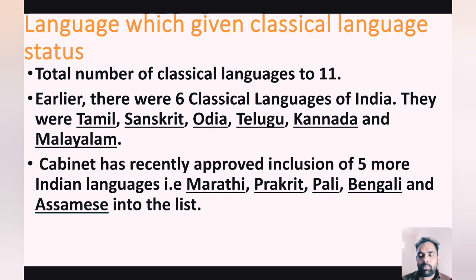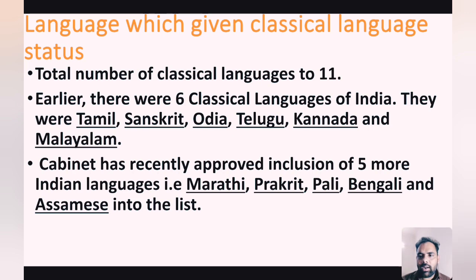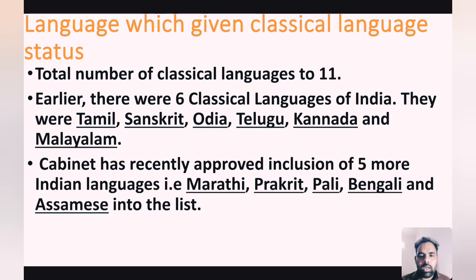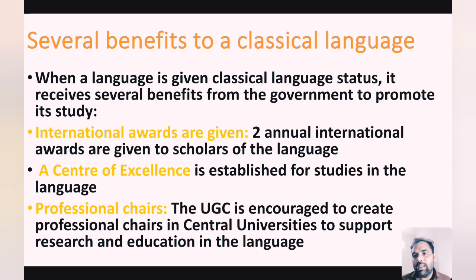The classical languages of India currently include Tamil, Sanskrit, Odia, Telugu, Kannada, and Malayalam. The Union Cabinet has approved five more languages into this list: Marathi, Prakrit, Pali, Bengali, and Assamese.